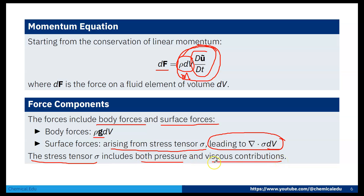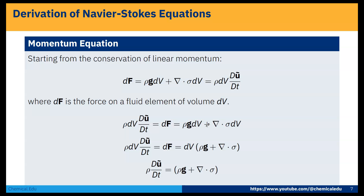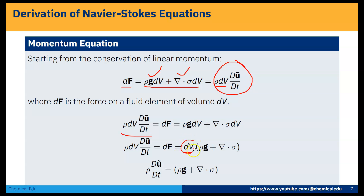Adding the two forces: total dF equals the body force plus the surface force, which equals mass into acceleration. Writing mass into acceleration on the left side and the two forces on the right: mass × acceleration = ρg·dV + (∇·σ)dV. Taking dV as common and cancelling from both sides, we get ρ(Du/Dt) = ρg + ∇·σ.